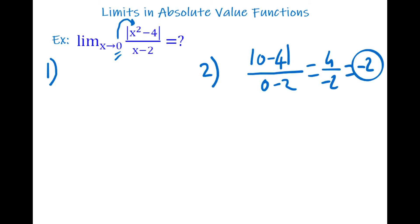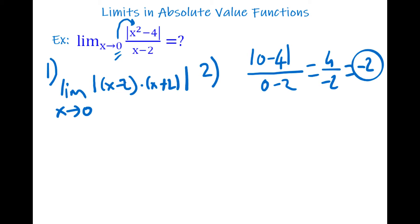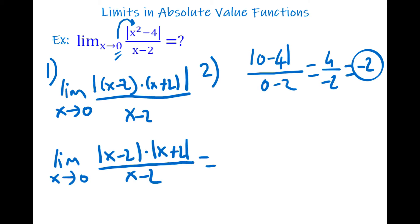I also want to show a second way that helps with undefined conditions. Take the limit as x goes to 0 of |x² − 4| / (x − 2). Factor the numerator inside the absolute value: |(x − 2)(x + 2)| / (x − 2). Using properties of absolute value, we can split this.